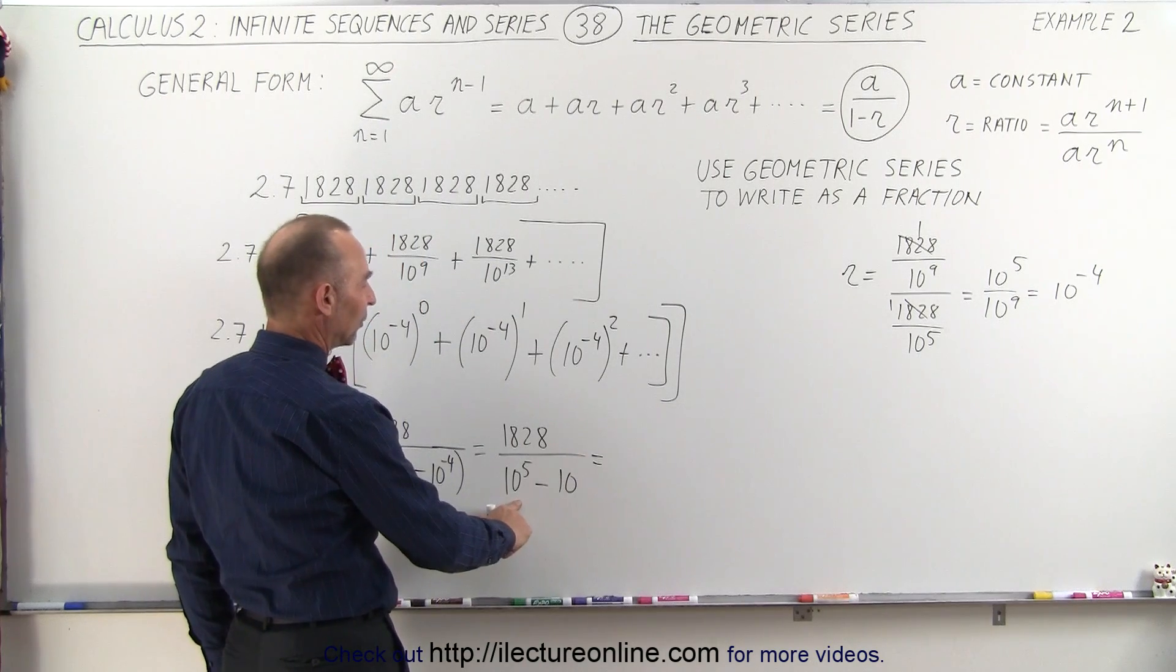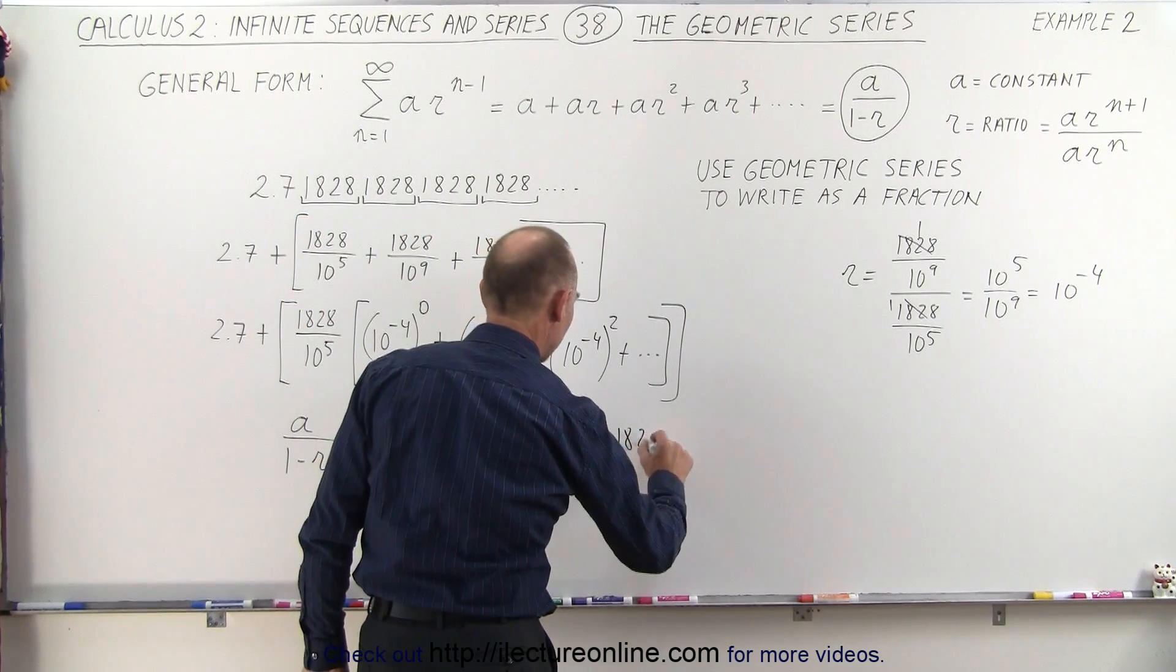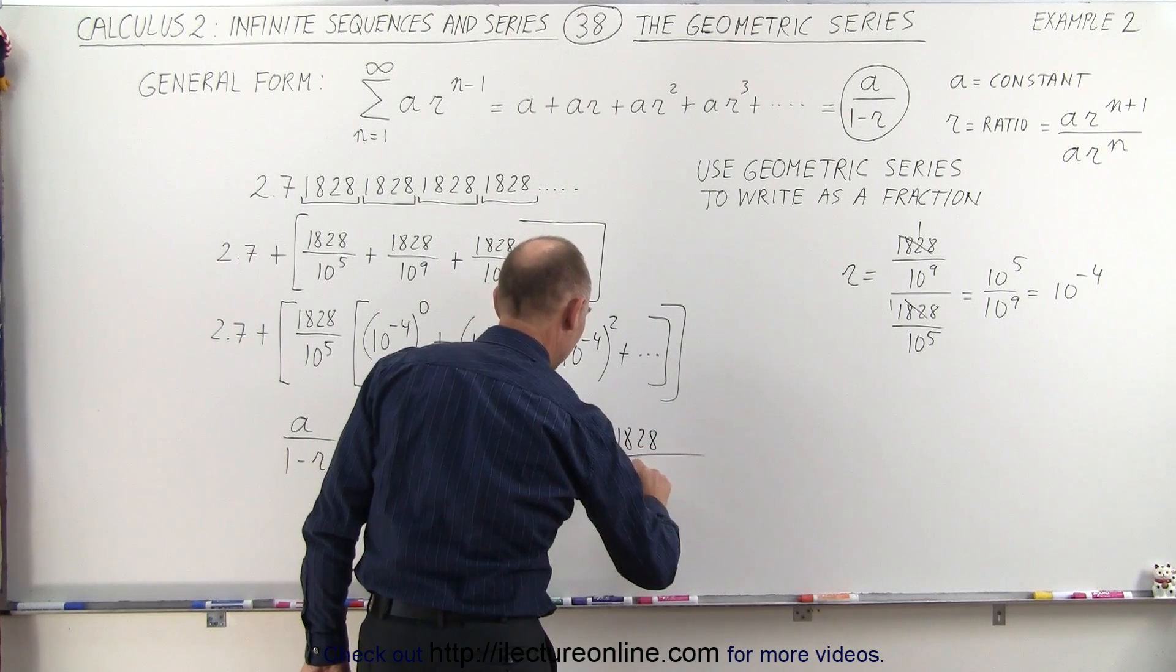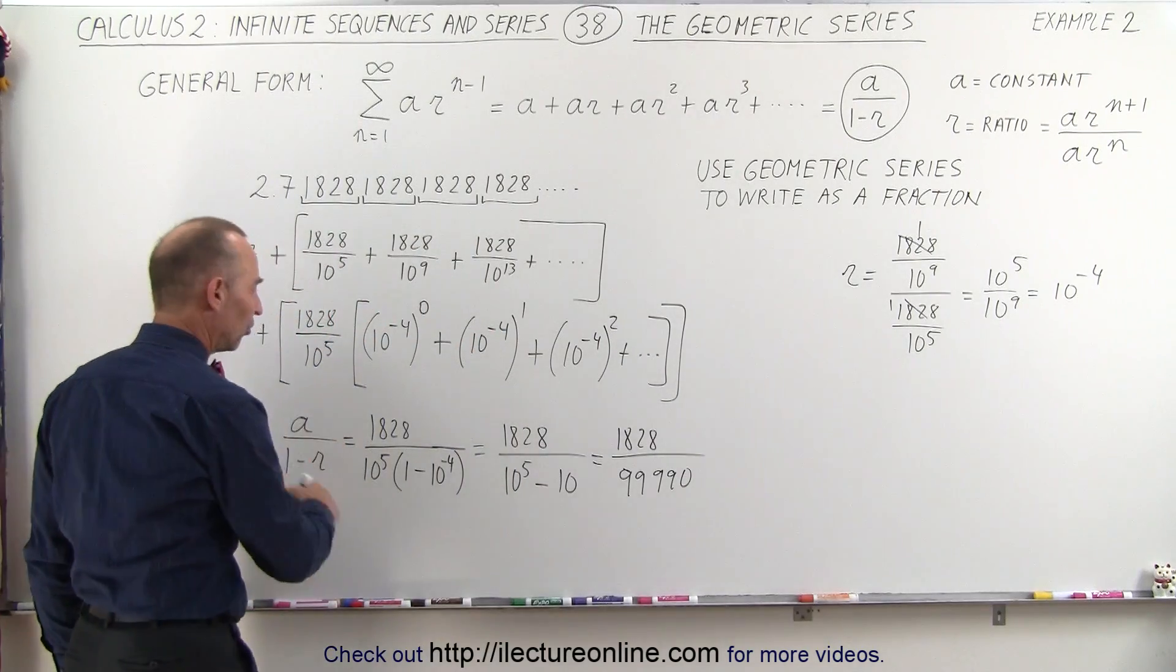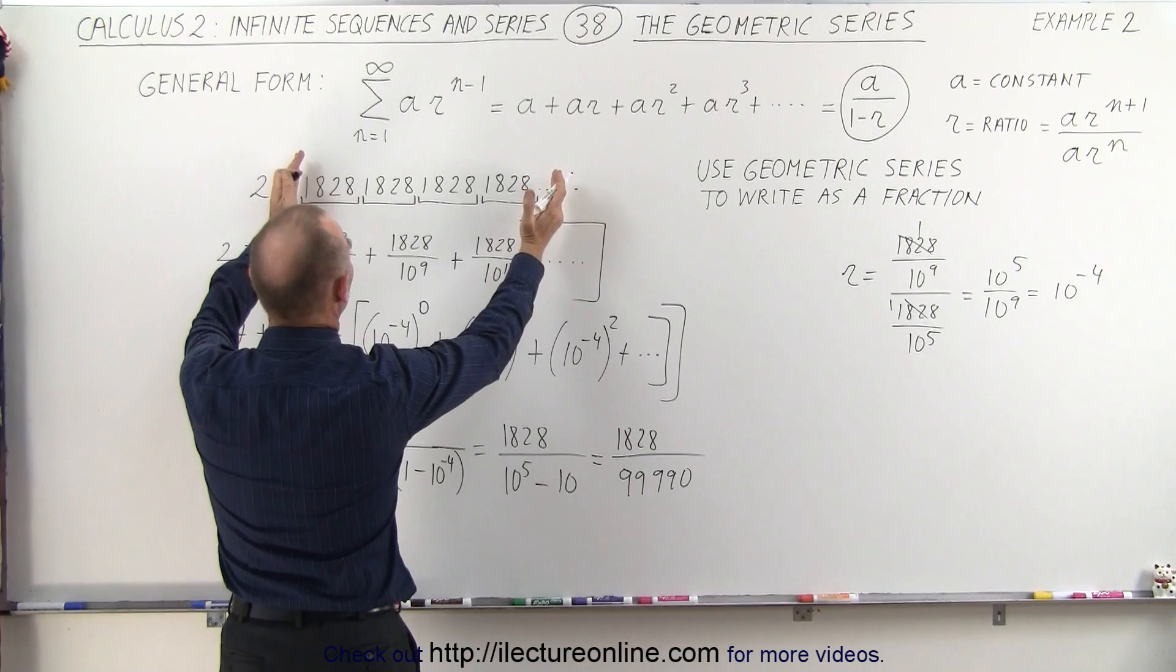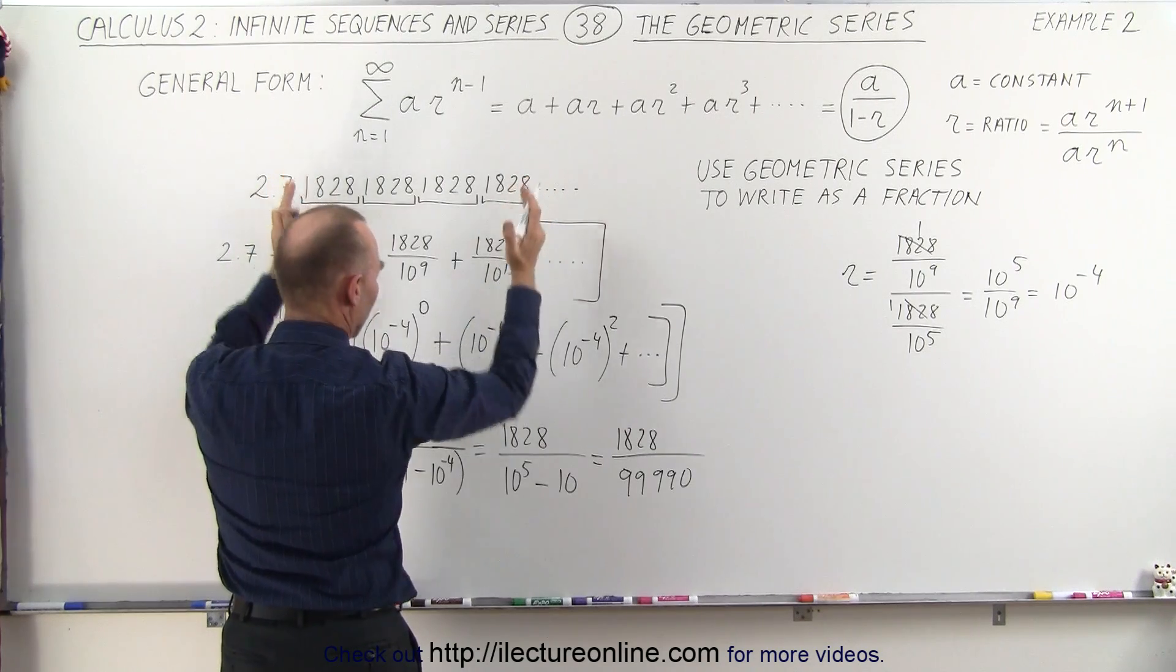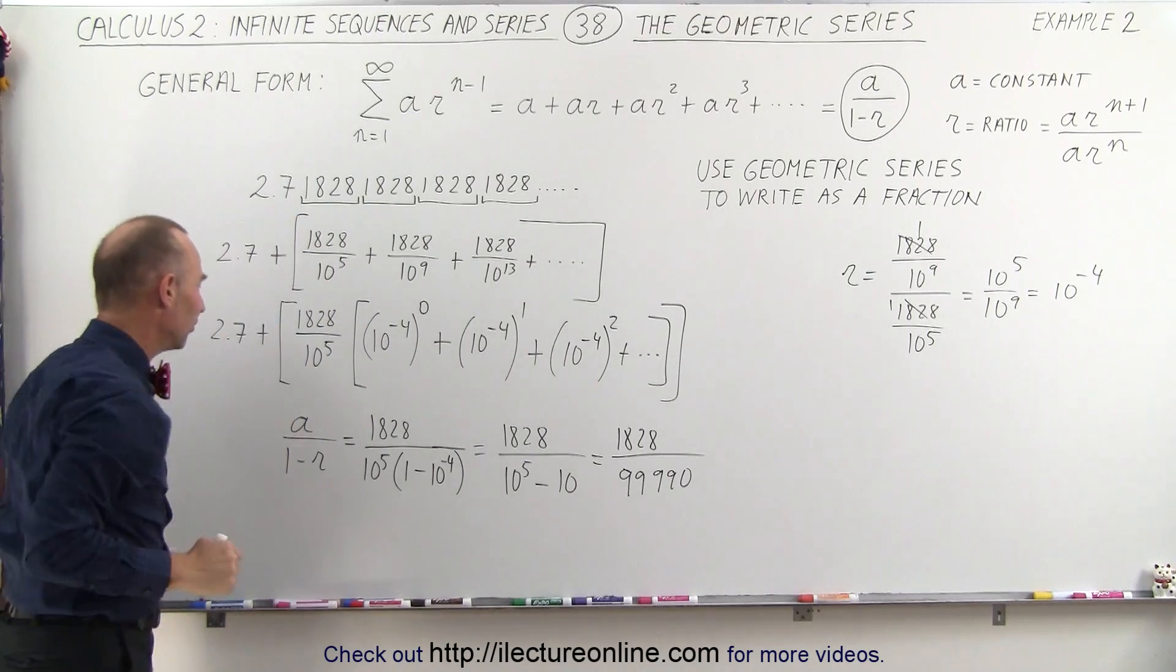So 10 to the 5th, that's equal to 100,000 minus 10. That would be equal to 1828 divided by 99,990. So that is equal to the sum of this portion of the number. So now this is equal to taking this portion and writing it as this. Now we need to add 2.7 to that.